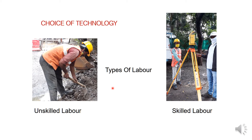The choice of technology also includes types of labor — skilled labor and unskilled labor. When we use unskilled labor, we require more time to complete the work but less cost. If we prefer skilled labor, we require less time and can achieve better quality of work, but the cost will be high.